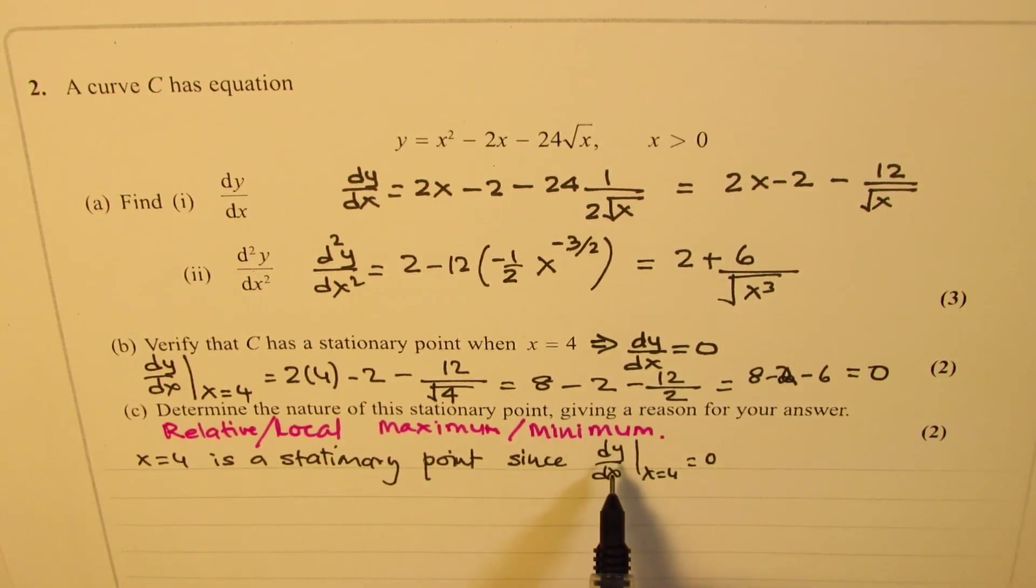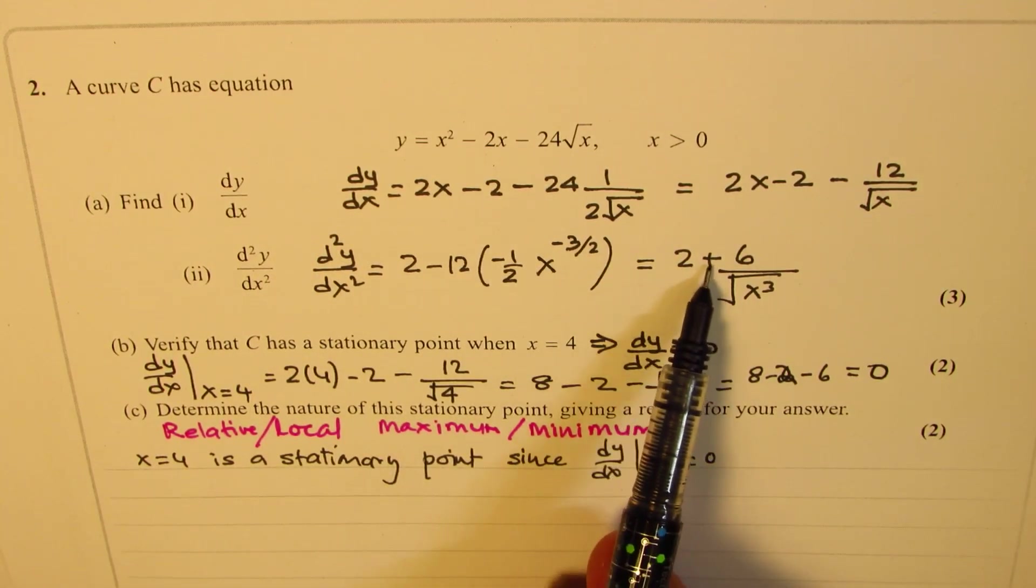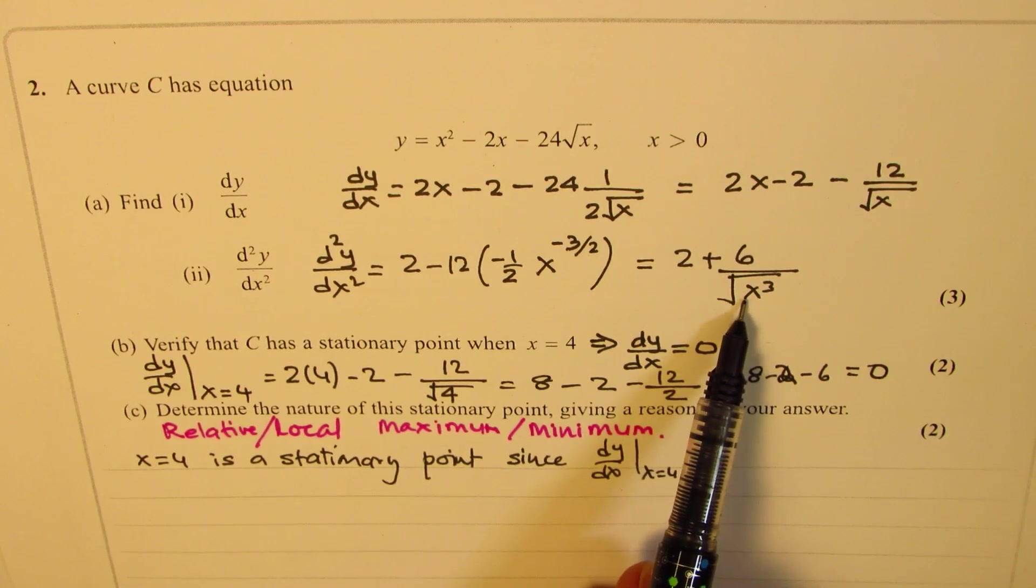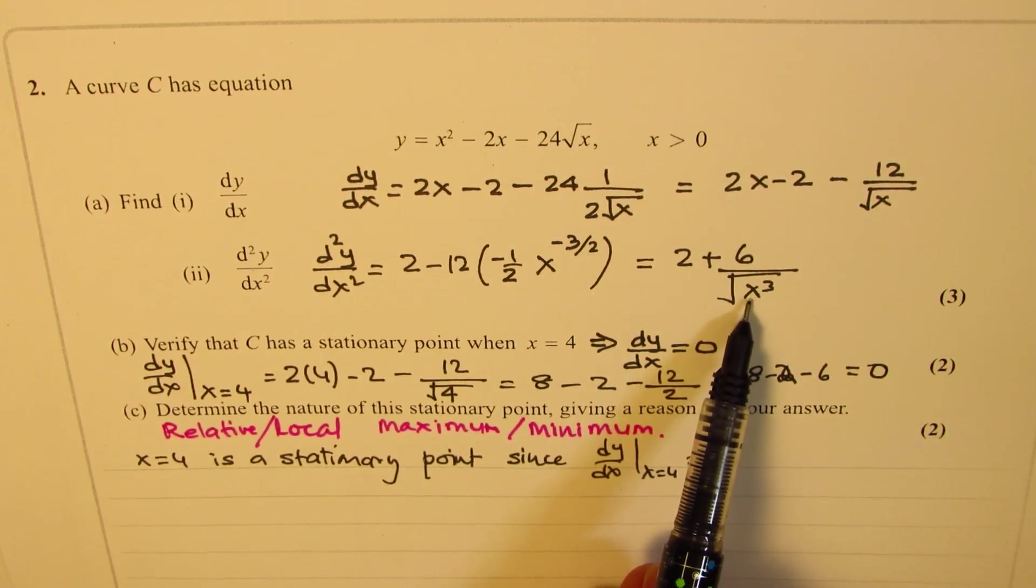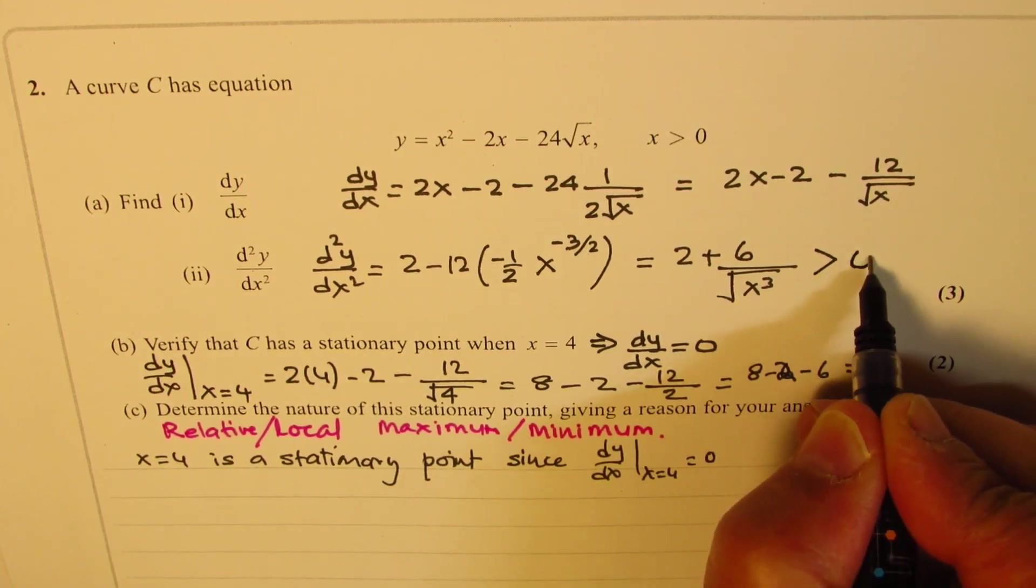So how do we justify that? We have an expression for d²y/dx². The expression is 2 plus 6 over square root of x cubed. Now this expression is always greater than 0, this is always positive.